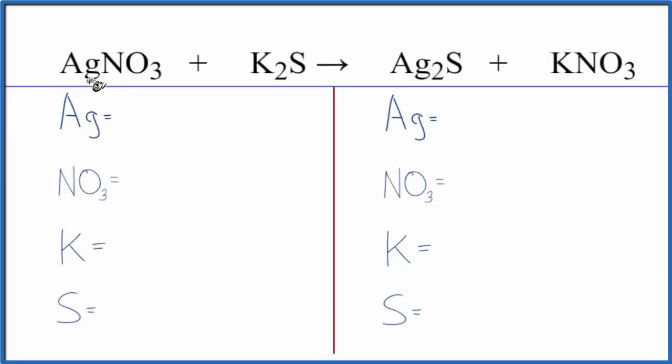In this video, we'll balance the equation for AgNO3 plus K2S, silver nitrate plus potassium sulfide. This is a double replacement reaction.